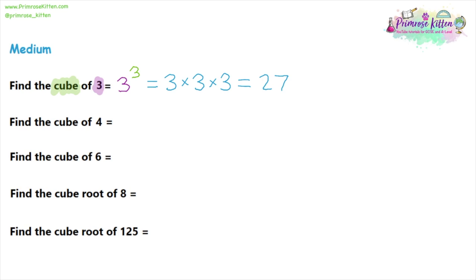Like squaring, the word 'cube' links to geometry: if you had a cube with length, width, and height all three, the volume would be 27. For question two, the cube of four is four to the power of three — three fours all multiplied together. Four times four is 16, then 16 times four: a trick with multiplying by four is to double it twice. Double 16 to 32, and double 32 to 64. So the cube of four is 64.